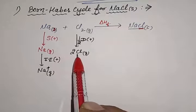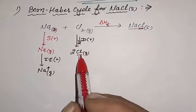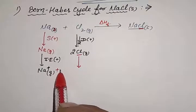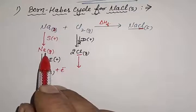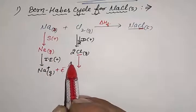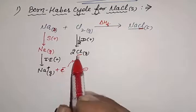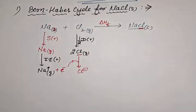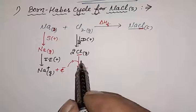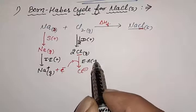Here we have 1 Cl because it was reduced by one half. The electron removed from the Na gaseous atom goes to the Cl atom to form Cl⁻. When a gaseous atom accepts an incoming electron, the amount of energy released is called electron affinity, and the electron affinity value is negative.